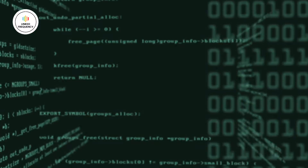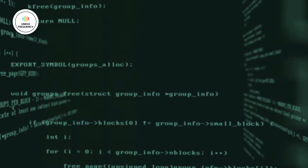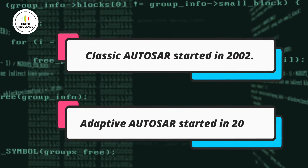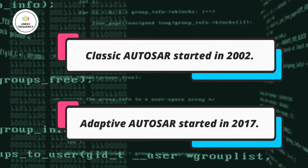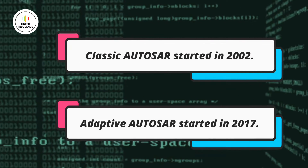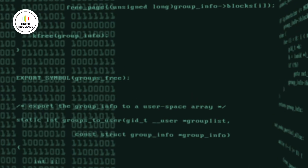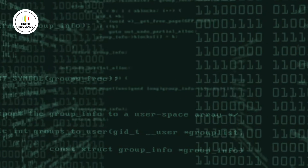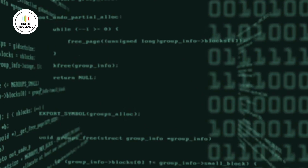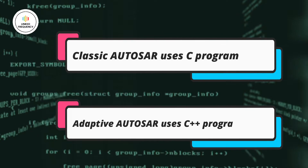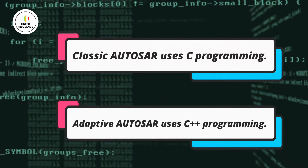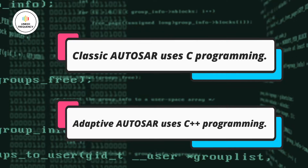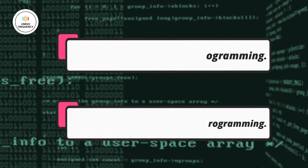Now let us move on to the differences between classic AUTOSAR and adaptive AUTOSAR. The first difference is based on release dates: classic AUTOSAR started in 2002, whereas adaptive AUTOSAR started recently in 2017. The second difference is the programming language used: in classic AUTOSAR, C programming is used, whereas in adaptive AUTOSAR, C++ programming language is used.